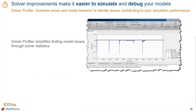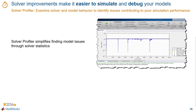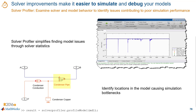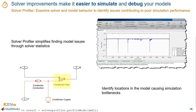The solver profiler gives you a simple way to find issues and bottlenecks affecting simulation performance through solver statistics. It makes it easy to pinpoint the specific parts of the model causing bottlenecks. You can also improve your solver performance by specifying the execution domains of subsystems in your models, meaning you set up parts of your model to simulate as discrete time or non-discrete time, so subsystems can remain discrete regardless of the surrounding blocks.